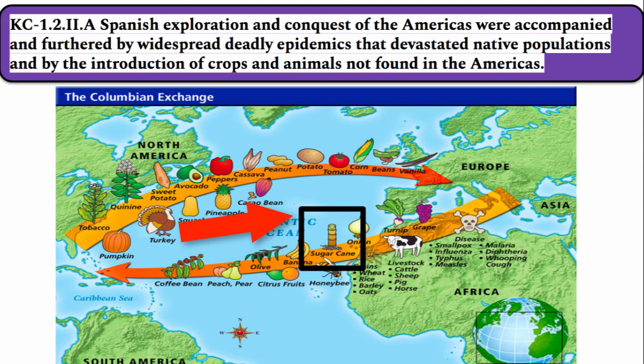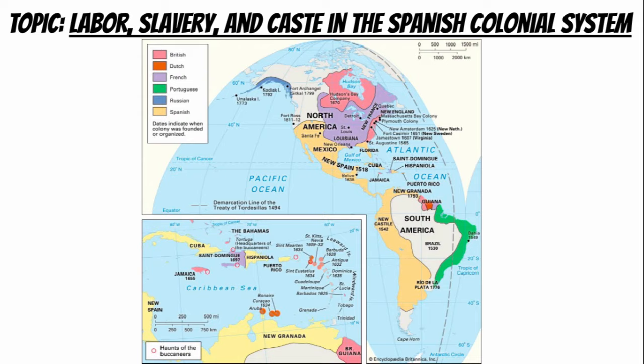There will also be some unintended consequences from the Columbian Exchange. For example, while sugar being brought to the New World will definitely make chocolate taste so much more yummy, it will also lead to the rise of sugar plantations in places like Brazil and the Caribbean, which will eventually lead to a rapid growth of African slavery. The next big topic is labor, slavery, and caste in the Spanish colonial system.